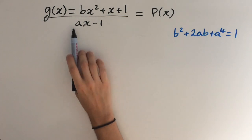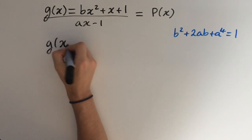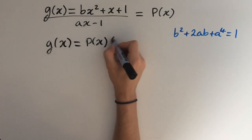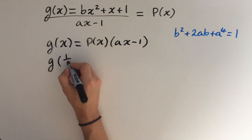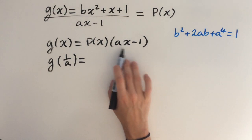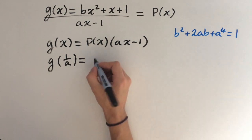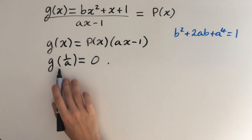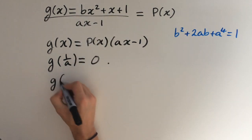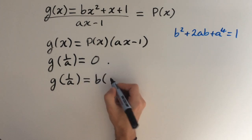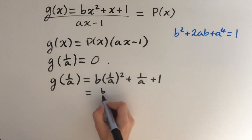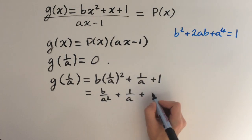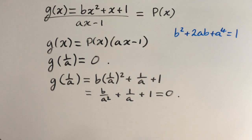This means when we divide g of x by ax minus 1, we're going to get exactly some polynomial I've called p of x, but no remainder. So let's do the same thing as last time — we're going to multiply both sides by ax minus 1. On the left-hand side we'll get g of x; on the right-hand side we'll get p of x times ax minus 1. So now we're going to plug in x equals 1 over a, so we'll have g of 1 over a, and the right-hand side bracket goes to 0. Keep in mind that a is non-zero, so 1 over a and 1 over a squared are both well-defined.